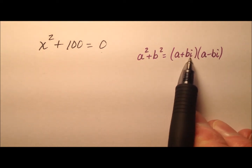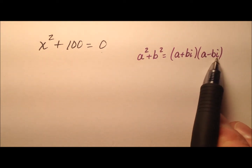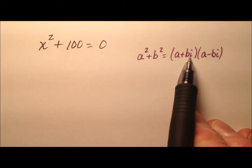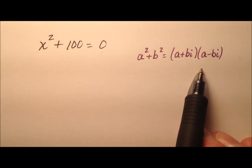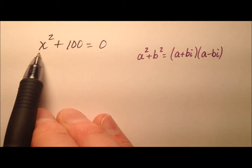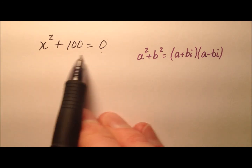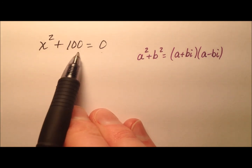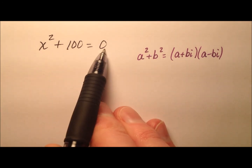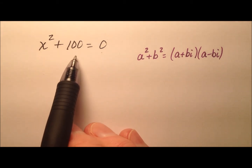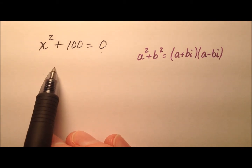So again, we have our complex numbers here with our imaginary i. What's going to happen is we're going to factor these expressions equal to zero, and then we're going to set each factor equal to zero using the zero property of multiplication.